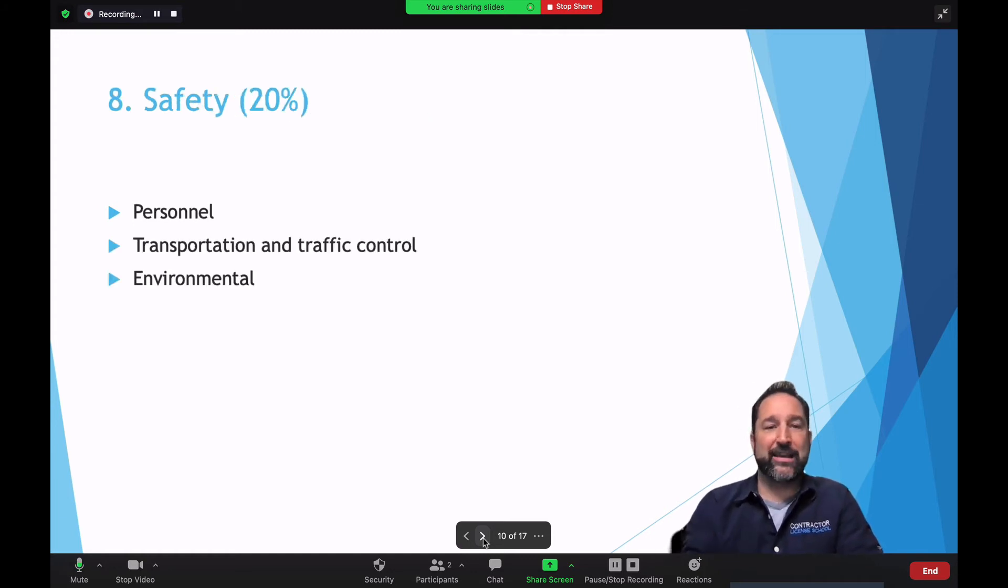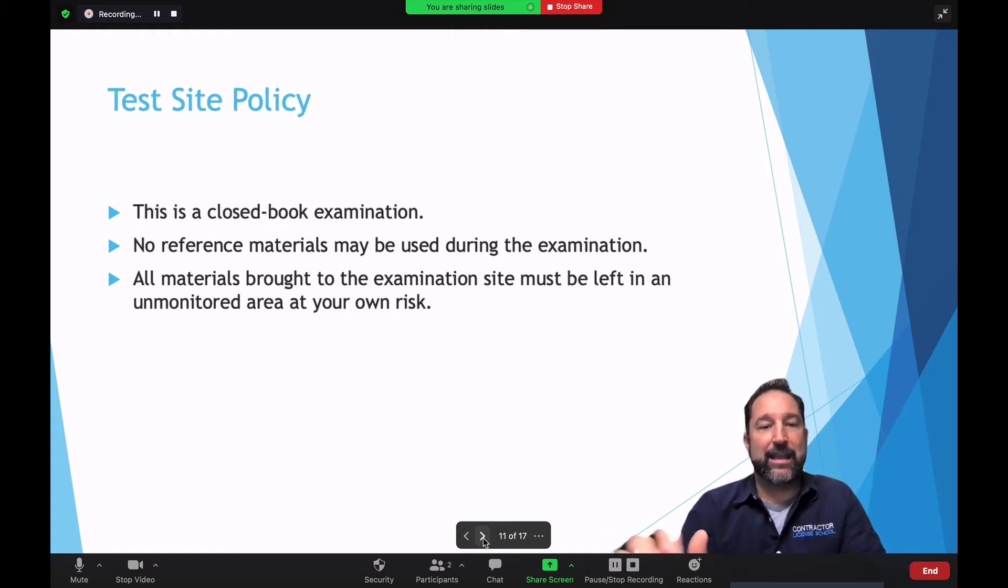Now, eight, and finally, safety, 20%. A lot of injuries statistically in the construction industry due to unsafe and unhealthy practices. So 20% of your state exam is actually going to be on safety and health standards. So we're going to cover things like personnel, transportation and traffic control as it pertains to safety and environmental. So these ladies and gentlemen are the eight components that you're going to see on the state exam. This is what makes up the trade exam for the general engineering trade A in California.